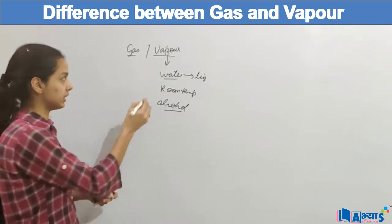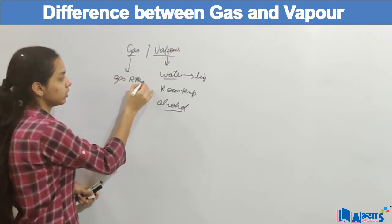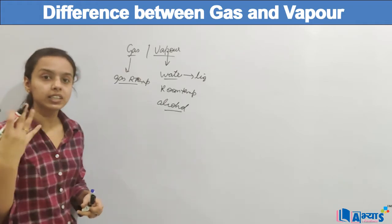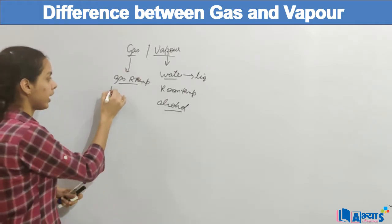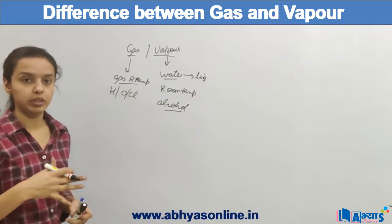Now for all the gases which are gas at room temperature, we always use the term gas. For example, hydrogen, oxygen, even chlorine, all these are gases at room temperature.